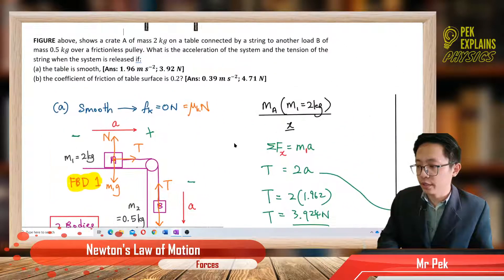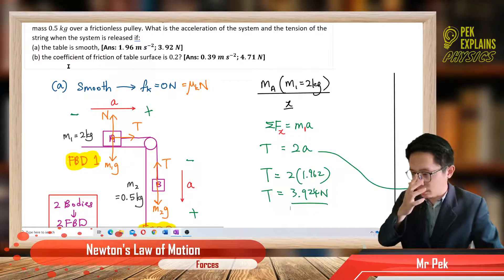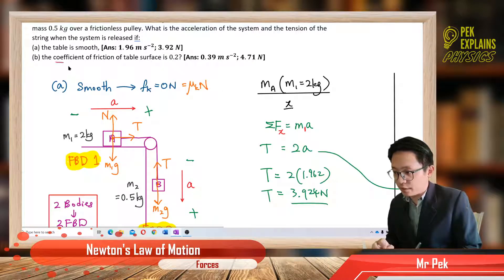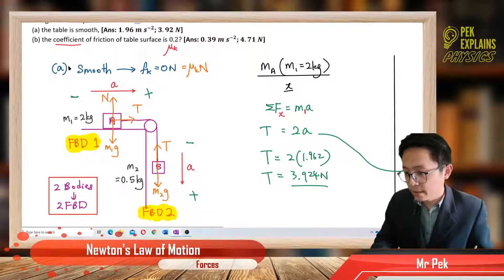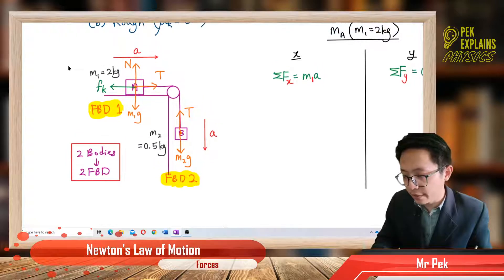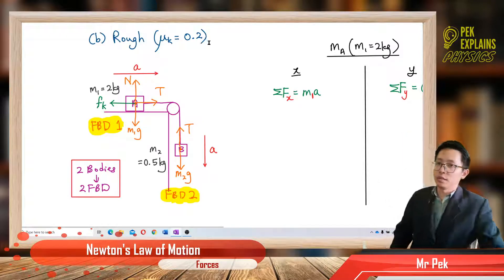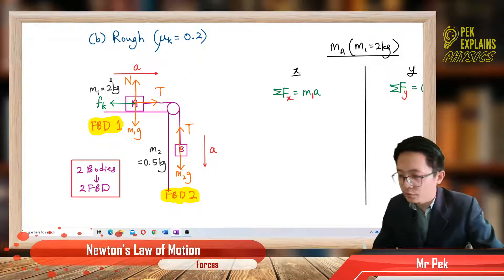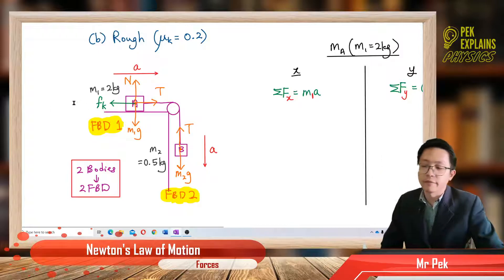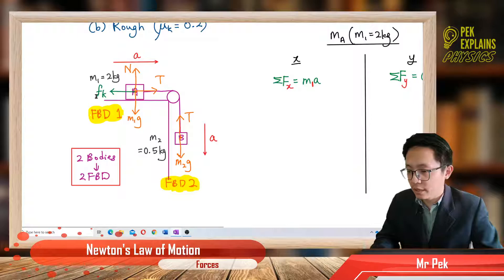Now Part B: the table surface has friction. The coefficient of friction is 0.2. Be careful — this is only the coefficient (mu K), not the friction force itself. The coefficient has no unit. So draw the free body diagram again — now the surface is rough, coefficient 0.2. Add friction acting to the left, because the motion of A is to the right, so friction acts in the opposite direction.